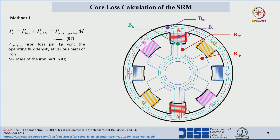For core loss calculations we follow method one as discussed in the case of the induction machine. The stringent coefficients and frequency terms will not apply to the SRM — using them would give incorrect calculations. Instead, the power loss factor multiplied by mass is used. First, identify the maximum operating flux density points with respect to all regions.